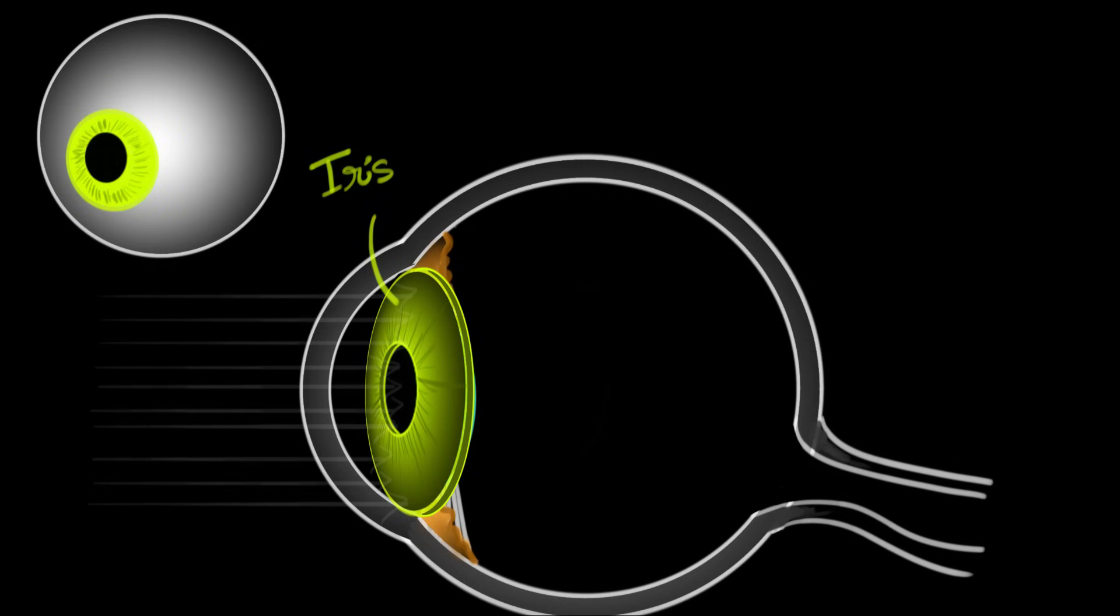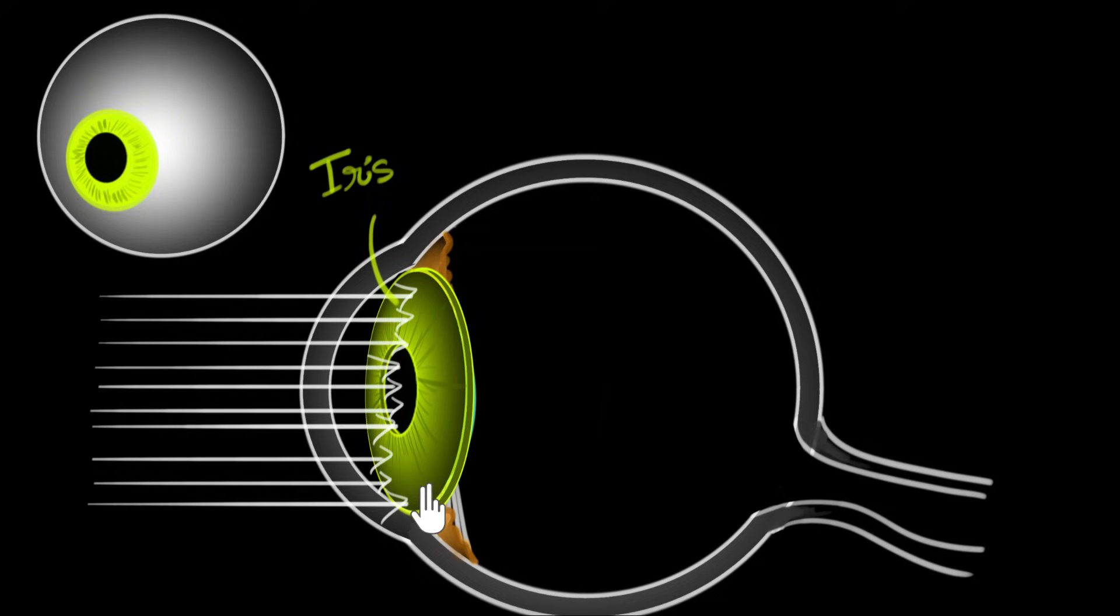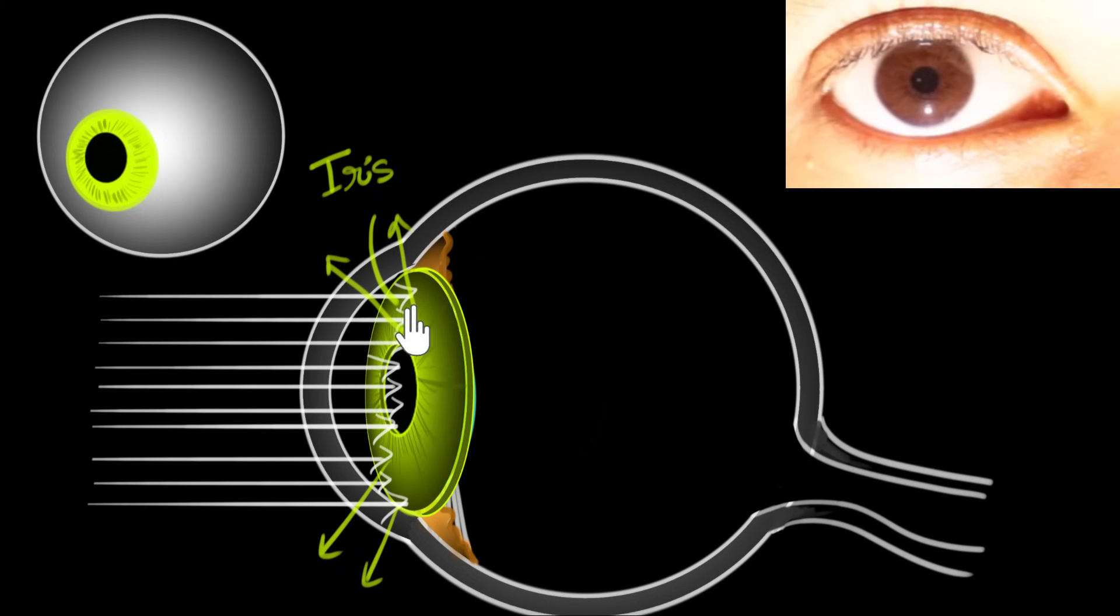So when light hits our eyes, the light that falls on our iris gets reflected. And the color of the light that gets reflected totally depends upon the pigment that makes it up. In this case, it is green. And so we would say that person has green eyes. In my case, for example, it is brown.